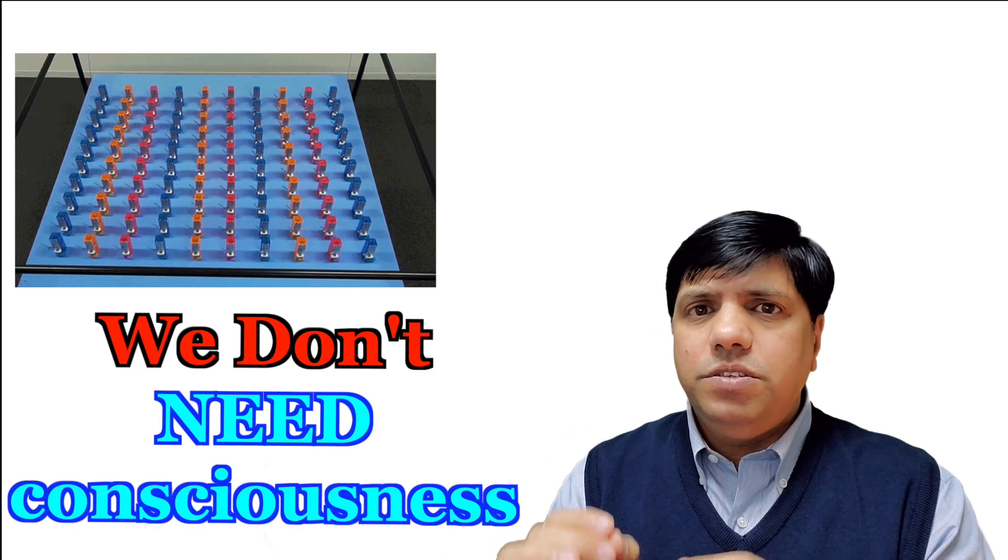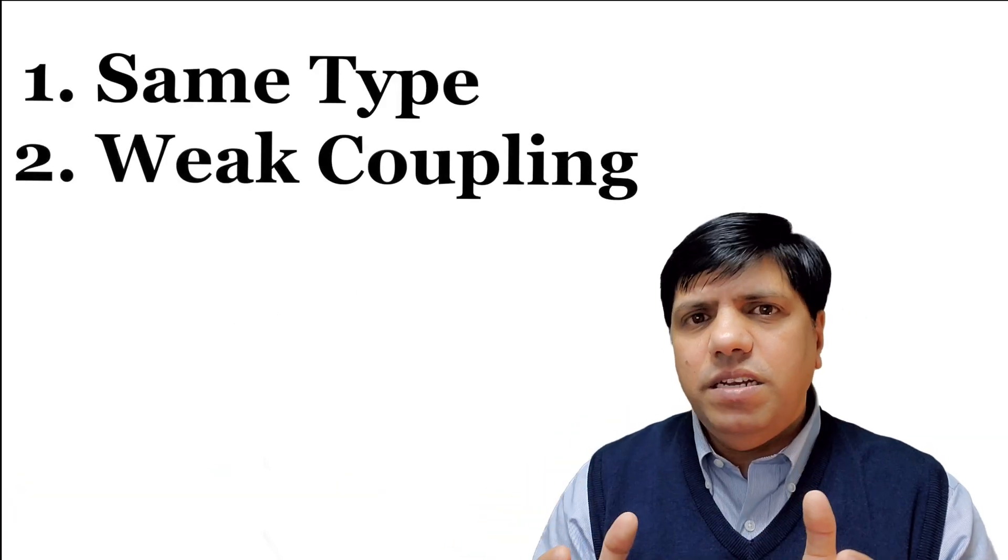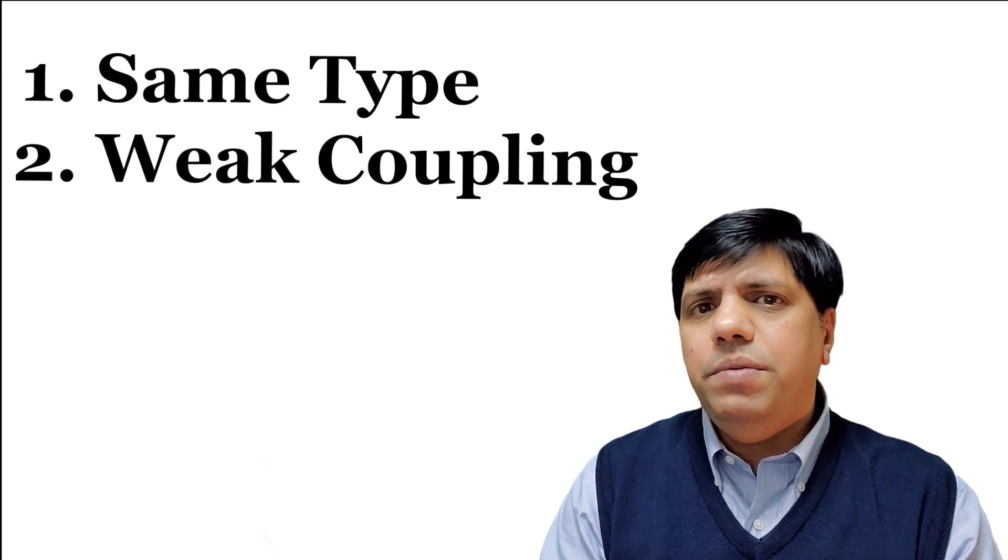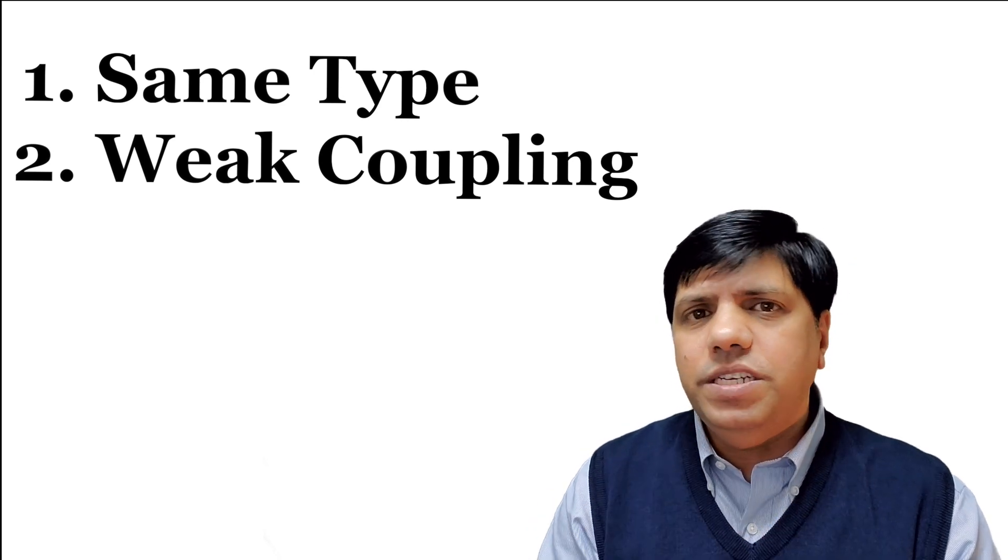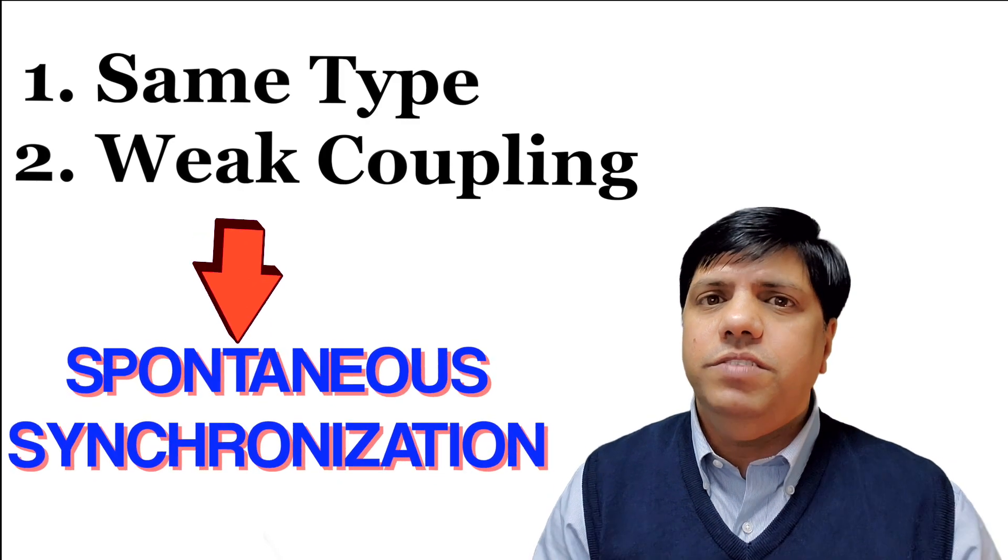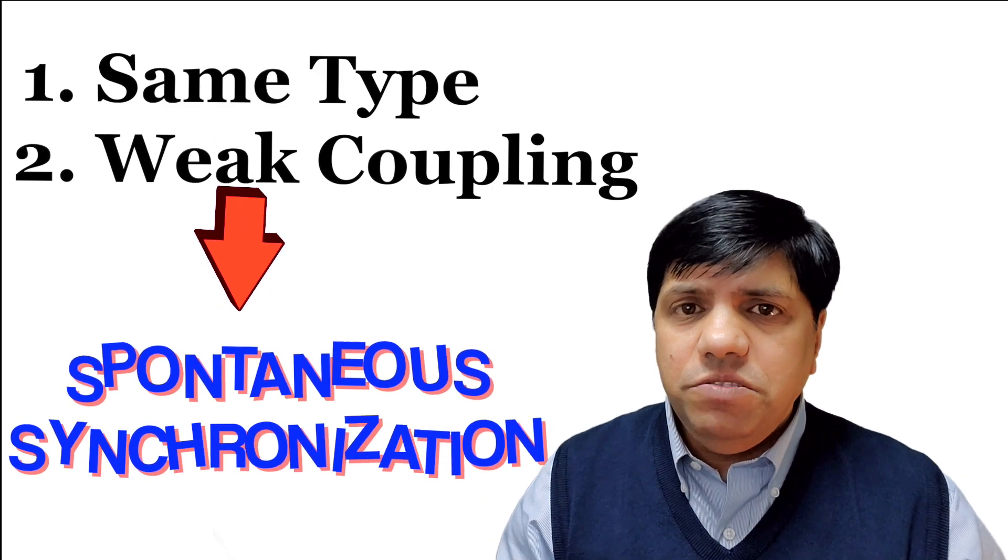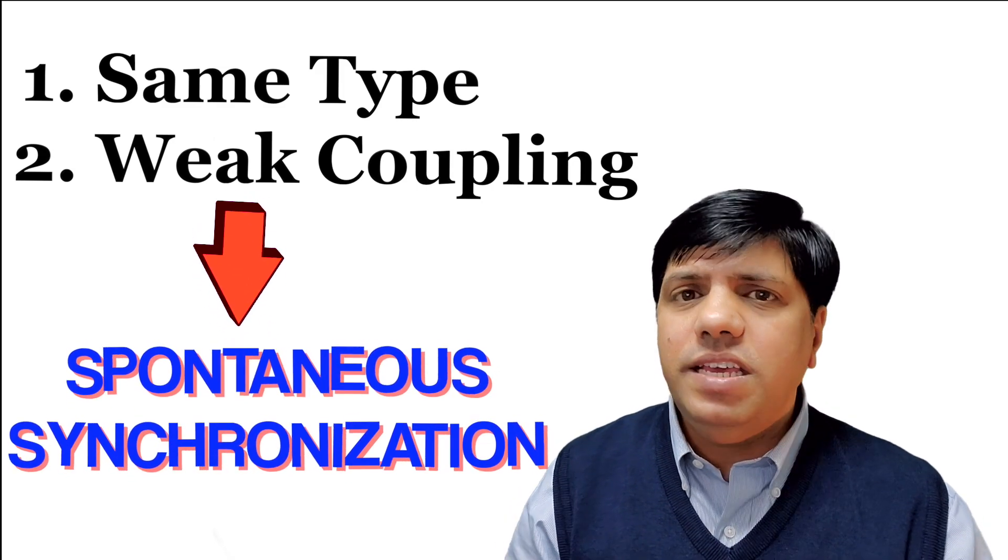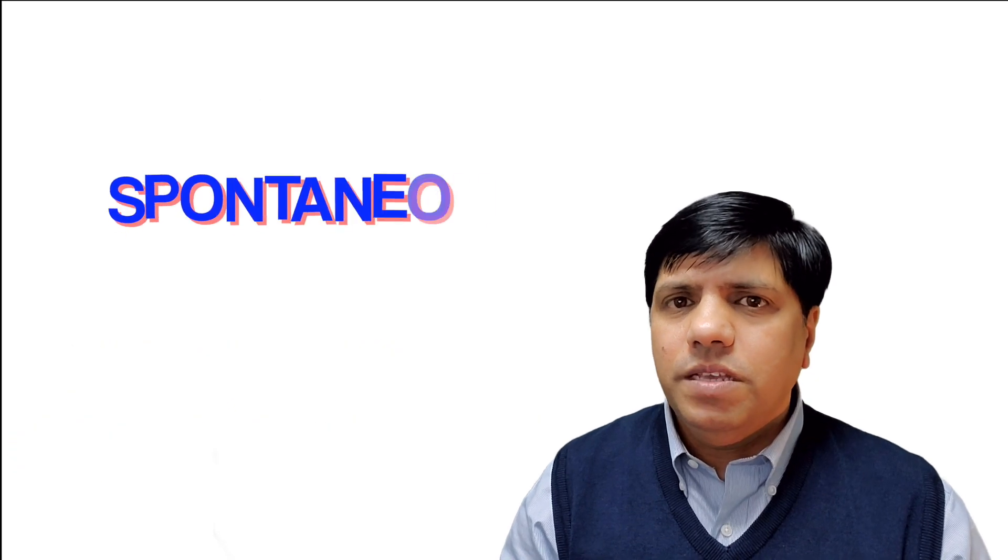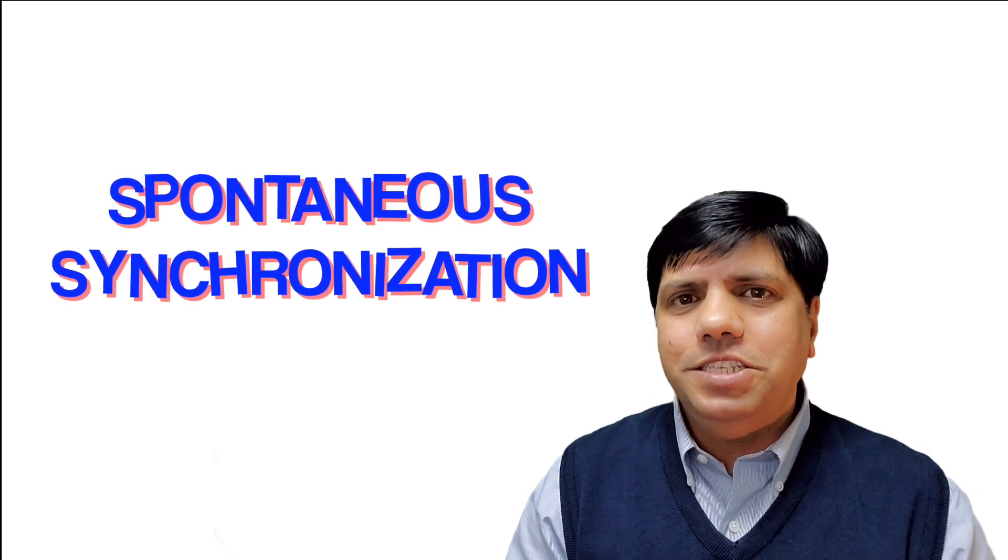As long as the organisms or the things are of the same nature, and as long as they have a system which can provide a weak coupling to neighboring units, neighboring organisms, neighboring metronomes, this spontaneous synchronization is achievable. So the main takeaway is it's the system that matters. How many units, how many organisms, how many things doesn't matter. Living or dead doesn't matter. Conscious or unconscious doesn't matter. Smart or stupid doesn't matter.